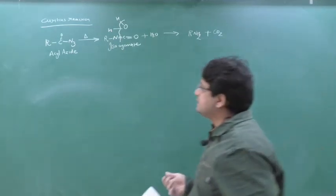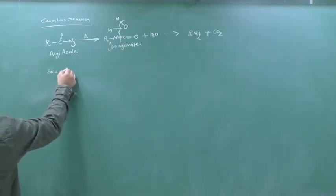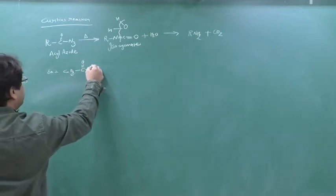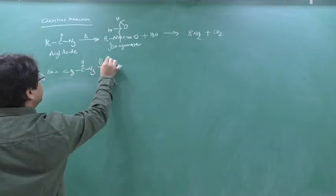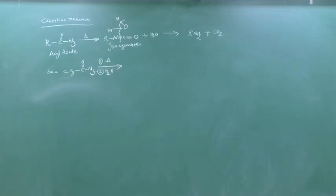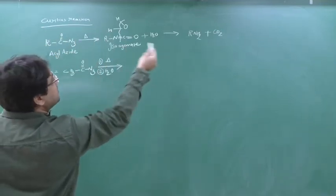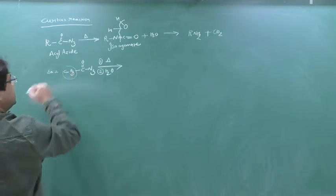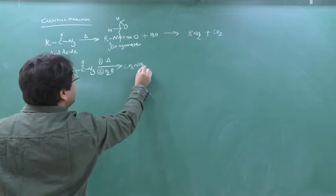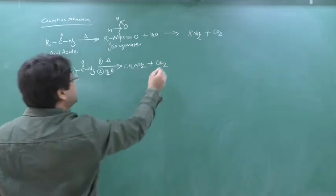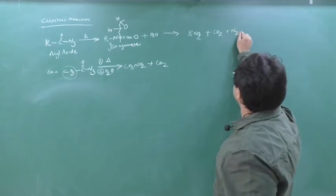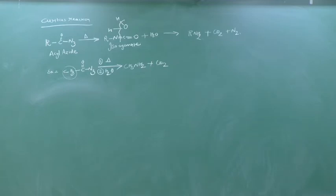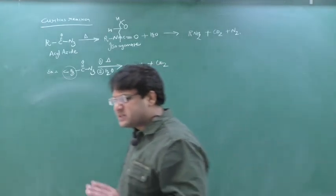Another example: CH₃CH₂–C(=O)–N₃. In the exam they show first heating, then H₂O. Whenever you see N₃, remember it is an azide and it uses the Curtius reaction. From the general reaction R–CO–N₃ → R–NH₂, here the R is ethyl. So ethyl attaches with NH₂ to give ethylamine. The remaining portion converts to CO₂ and nitrogen gas is also liberated. The mechanism is a bit difficult.